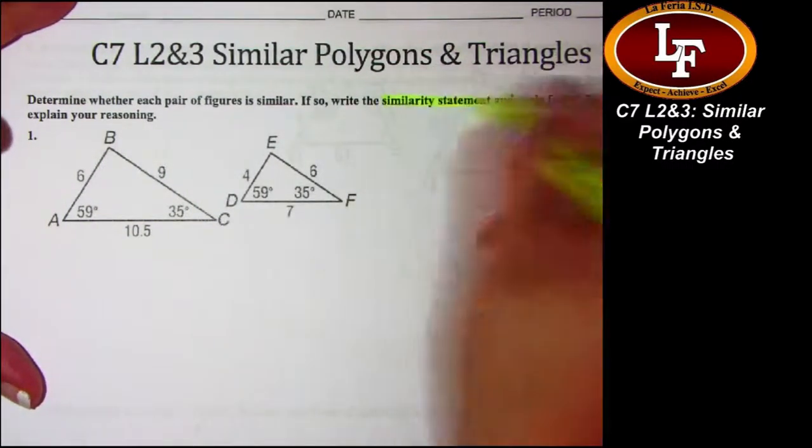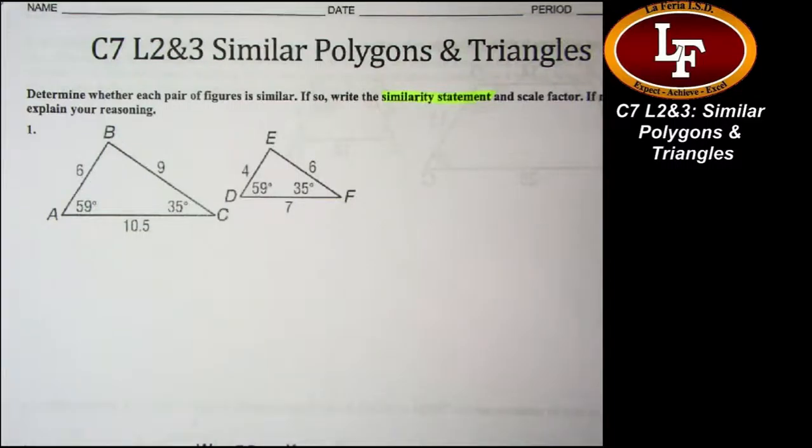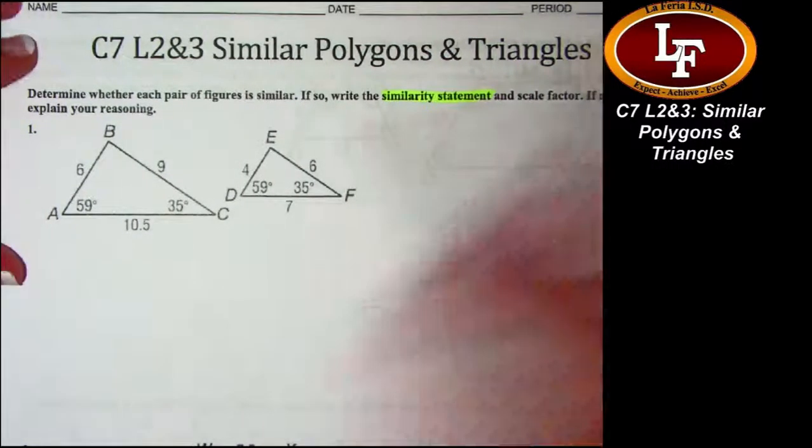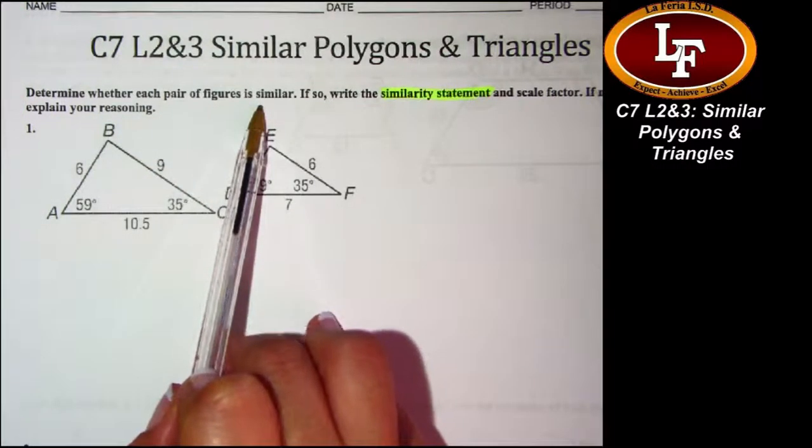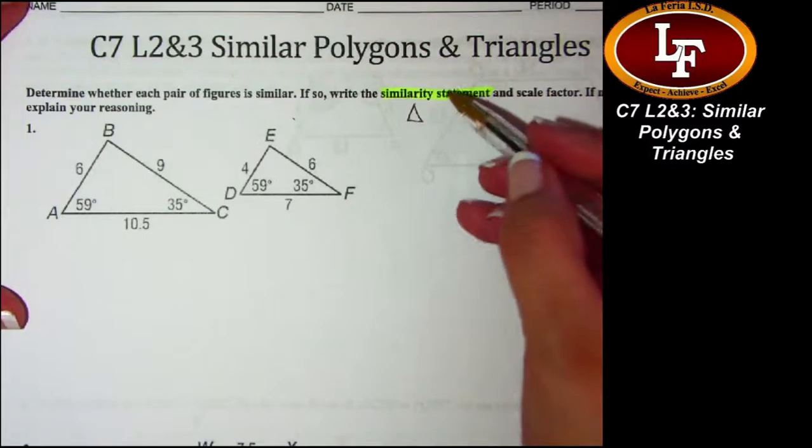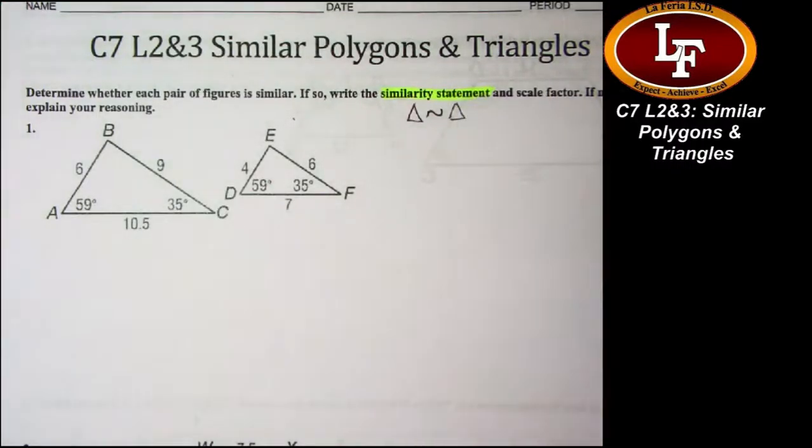From memory, what I recall is someone asking about similarity statements. A similarity statement is the statement that says the two figures are similar to each other. So if we're going to show that these two triangles are similar, and notice that we have to determine whether they are or not first, but if they are, we're going to write the similarity statement. So it would be something like triangle, whatever that triangle's name ends up being, Triangle Fred is similar to this other triangle, which we're going to name Triangle Jose. How do you know if they're similar or not, right?